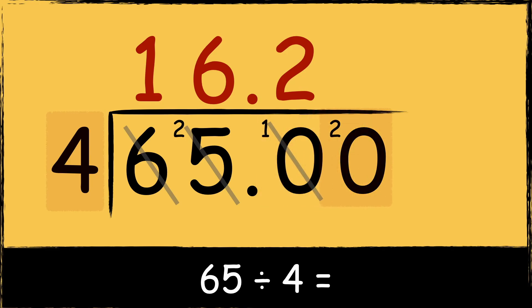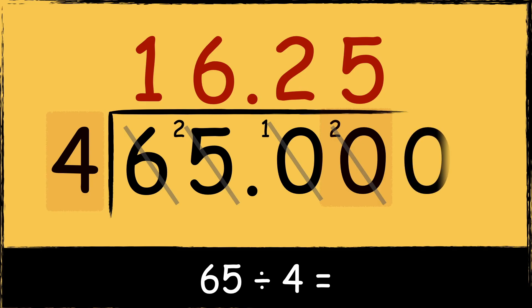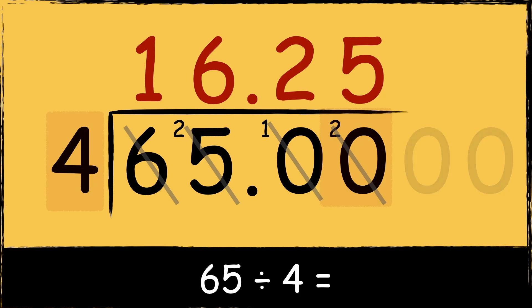Finally, four goes into twenty five times with nothing left over. If there were still some numbers left over, we just keep placing more zeros after the decimal point and keep dividing.